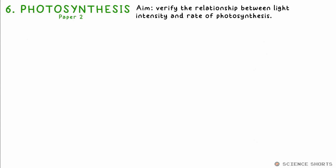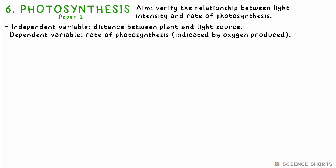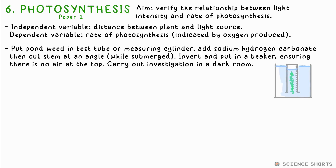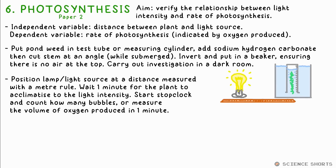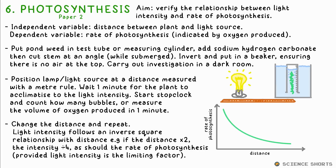Biology 6: photosynthesis. The aim is to determine the relationship between light intensity and rate of photosynthesis. Technically, the independent variable is the distance of the plant from the light source. The dependent variable is either the volume of gas made in a certain time, or the number of bubbles released, say, in a minute. We use pondweed submerged in water in an inverted test tube or measuring cylinder. Once it's in there, get scissors and cut the stem at an angle, and add sodium hydrogen carbonate to the water to promote oxygen release — and do this in a dark room. Measure the distance between the light source and pondweed using a metre rule. Turn on the light and wait, say, a minute for the pondweed to acclimatise and for photosynthesis to reach a constant rate. Then start counting bubbles or measure the volume of oxygen made. Repeat this at different distances, then plot bubbles or volume of oxygen against distance. You should get a curve because light intensity follows an inverse square relationship with distance — if you double the distance, the light intensity quarters, and therefore the rate of photosynthesis should too.